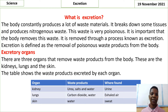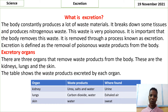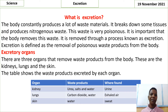What is excretion? The body constantly produces a lot of waste materials. It breaks down some tissues and produces nitrogenous waste. This waste is very poisonous. It is important that the body removes this waste. It is removed through a process known as excretion. Excretion is defined as the removal of waste products from the body.